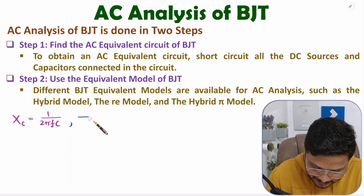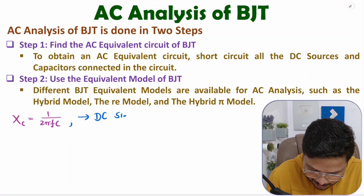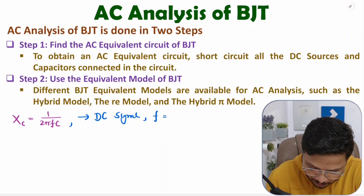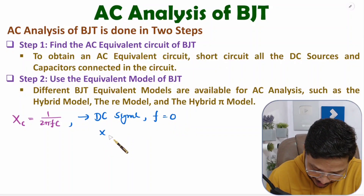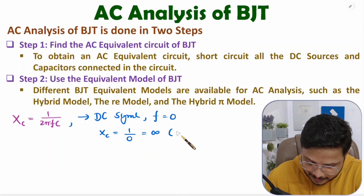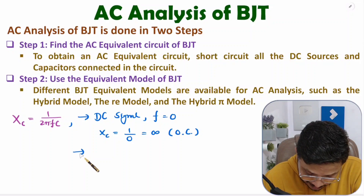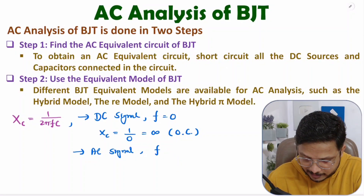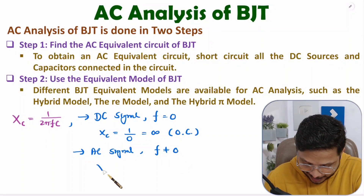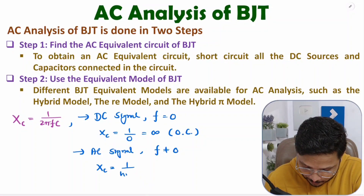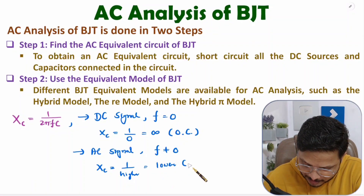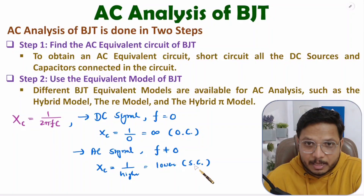Now, if you talk about a DC signal, the frequency is 0. So Xc = 1/0, which means it is infinite — that is open circuit impedance. If you talk about an AC signal, there will be some frequency, so Xc = 1 divided by a higher value, which gives a lower value. That lower value means you can consider it a short circuit ideally.